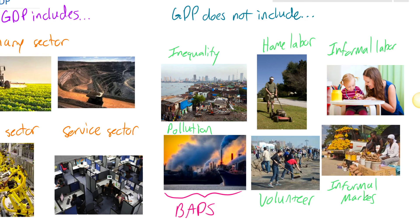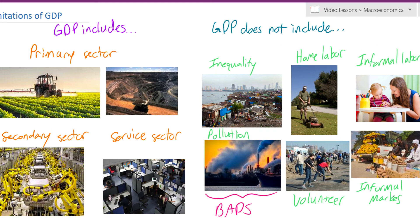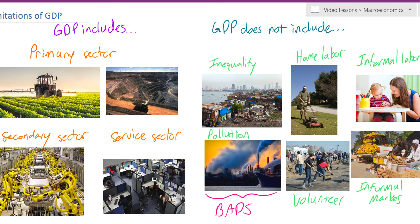In this video, we reviewed what GDP measures and what GDP is good at — measuring the value of the output of the primary sector, the secondary sector, and the service sector. But it does not include a lot of things that really impact the well-being of society: it doesn't account for income inequality, it doesn't subtract the negative pollution costs imposed on society, it doesn't measure the value of home labor like raising children or mowing your own lawn, it doesn't measure volunteer work, and there are all sorts of informal or non-market transactions that gross domestic product does not measure.